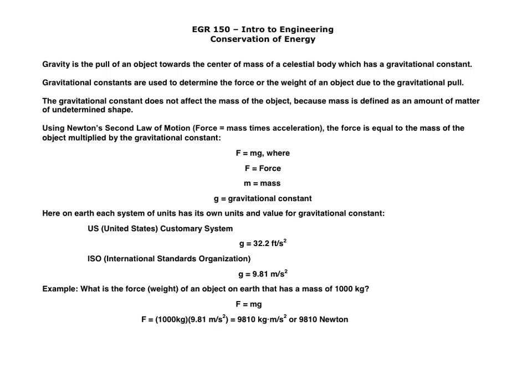So now let's talk about gravity that we're going to be using in these calculations, in these formulas. Gravity is the pull of an object towards the center of mass of a celestial body like the Earth or the Moon or Jupiter or Saturn. And each of these planets has its own gravitational constant based on the mass of the celestial body. So for instance, the Earth is larger than the Moon, so the gravitational constant of Earth is greater than the gravitational constant of the Moon. But Jupiter is larger than Earth, so it has a much bigger gravitational constant than Earth.